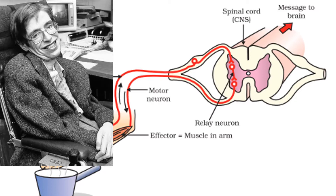Motor neuron disease — this is one that more people know about. It's a gradual breakdown of the motor nerves, and that means the brain cannot send messages down to the body. The most famous sufferer of this condition is the world famous physicist Stephen Hawking.